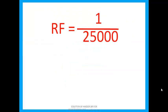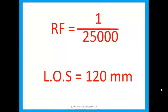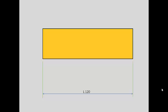So we have RF = 1/25000 and length of scale = 120 mm. Now let's start the drawing. Firstly, we will draw a rectangle and the length of the rectangle will be equal to 120 mm. This length represents 3 kilometers. For representing a single kilometer, we have to divide this rectangle into 3 equal parts, so each part will represent 1 kilometer.